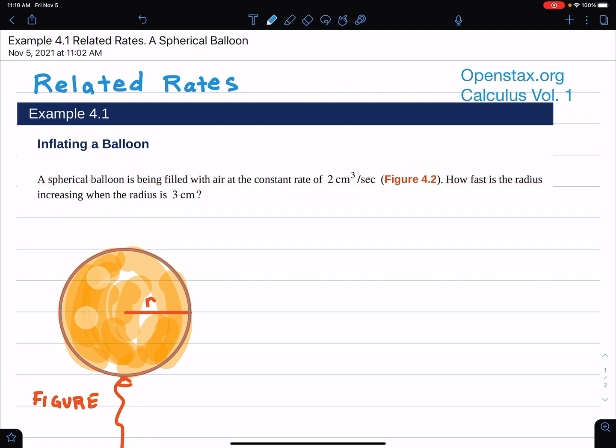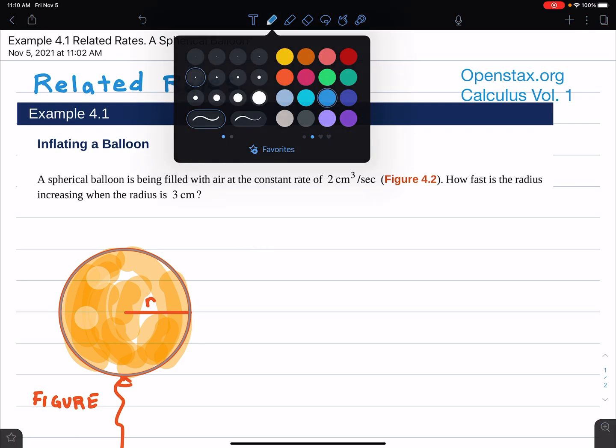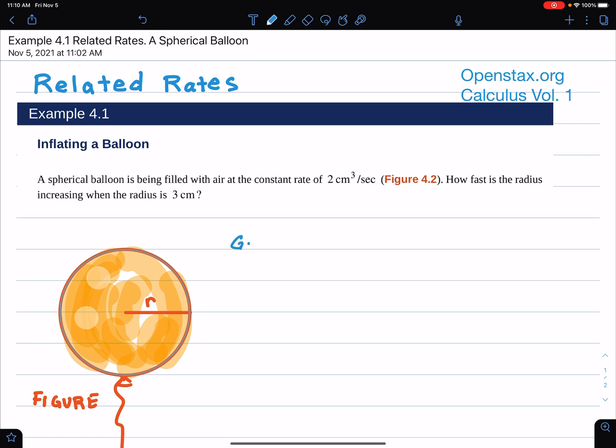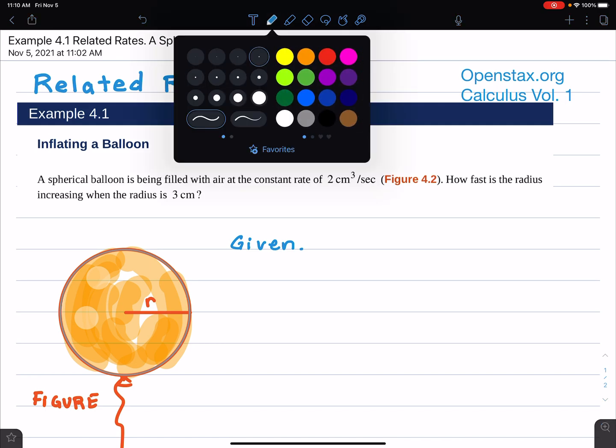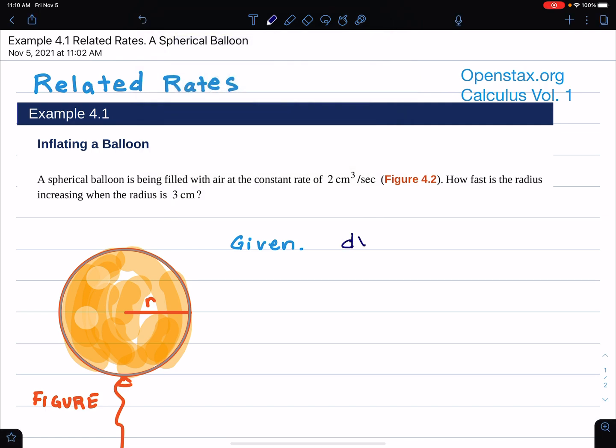Alright, let's write down some ideas first before we solve this. Let's write down what's given to us. Given is that the volume is increasing at a constant rate. Putting that in calculus language, we write that the derivative of the volume dV/dt is equal to 2. So the derivative of the volume with respect to time is increasing at 2 centimeters cubed per second. We write down positive 2 because it's increasing.